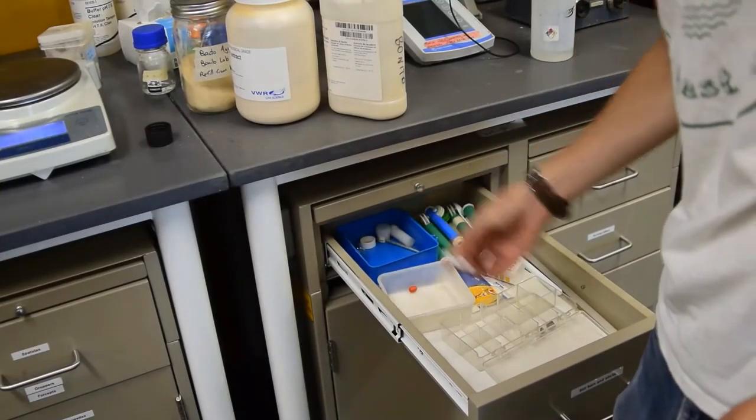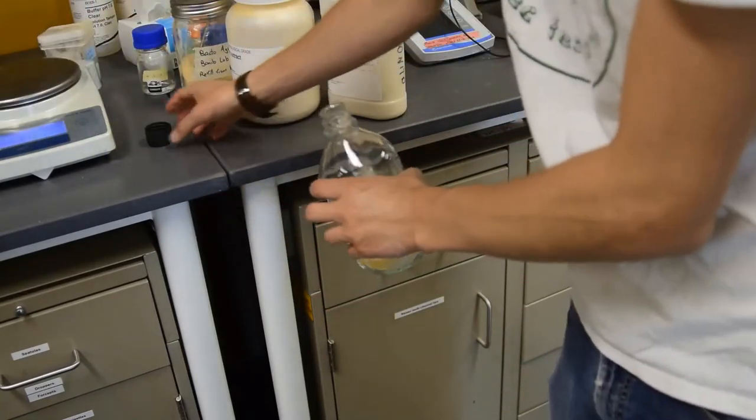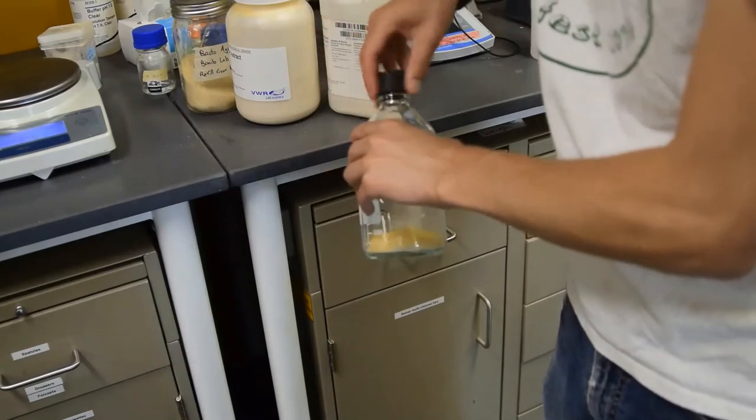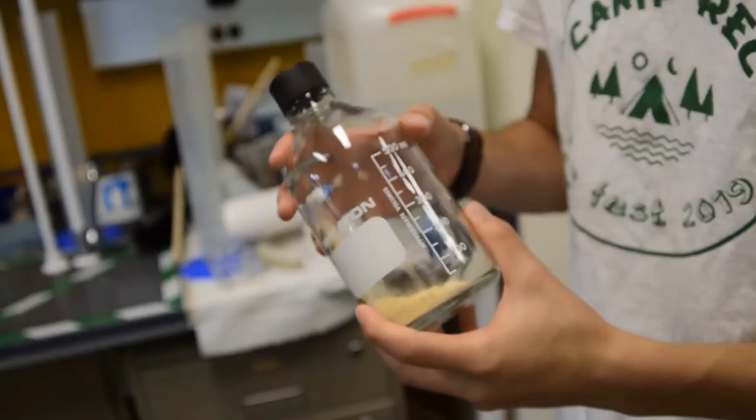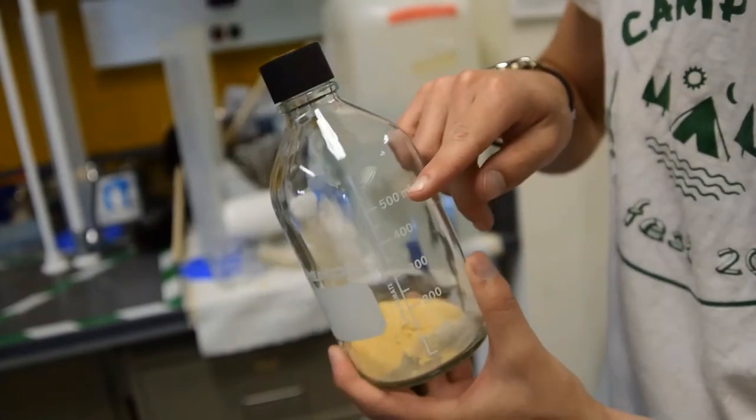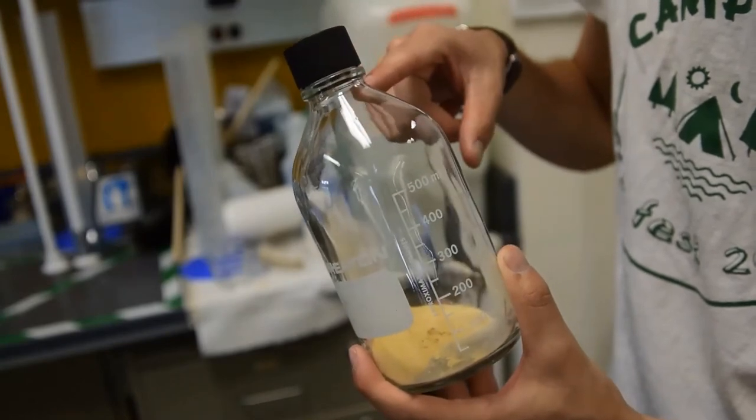Now we're going to need a magnet, which can again be found under the bench. This is used to help stir the solution in a sterile manner. Now we need water. For these bottles, we don't want to fill them above the 500 milliliter line because that makes them more likely to spill over in the autoclave.